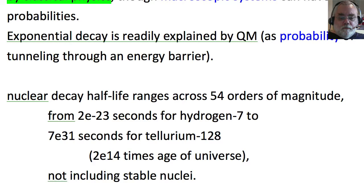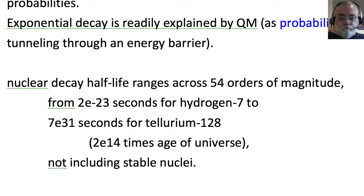Nuclear decay half-lives range across 54 orders of magnitude, from a small fraction of a second to 100 trillion times the age of the universe. This is for unstable nuclei; there also are stable nuclei that as far as is known would last forever. Some decays are so slow they are hardly measurable in a laboratory experiment, and others are so fast they occur in a fraction of a second and the nucleus is gone.